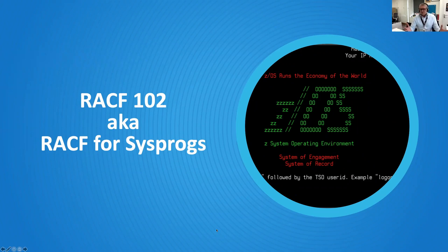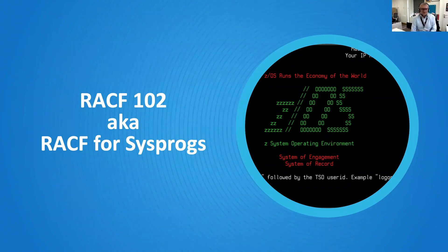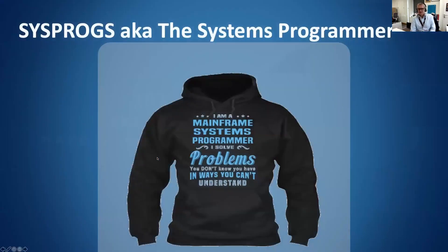We know how important the mainframe is — it runs the economy of the world, system of engagement, system of record. It's been doing cloud stuff since 1964, virtualizing everything from 1964 onwards. What does a systems programmer do? Summed up in one very relevant hoodie: if you were a systems programmer, you solve problems that people don't know they have in ways they can't understand. That's what we do — we fix stuff because we understand how it works.